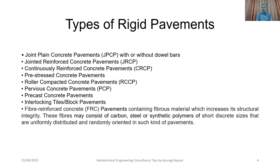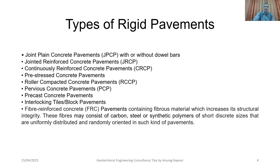Types of rigid pavements include: jointed plain concrete pavements with or without dowel bars, jointed reinforced concrete pavements, continuously reinforced concrete pavements, pre-stressed concrete pavements, roller compacted concrete pavements, pervious concrete pavements, precast concrete pavements, interlocking tiles and block pavements — currently trending at locations with water seepage problems — and fiber reinforced concrete pavements containing fibrous material such as carbon, steel, or synthetic polymers of short discrete sizes that are uniformly distributed and randomly oriented.